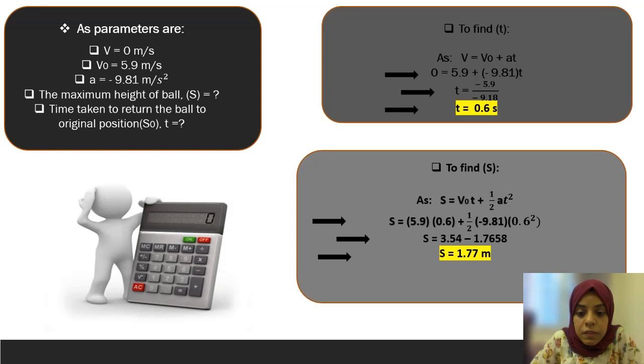By substituting the values and solving the equation, we find the time is equal to 0.6 seconds. To find the displacement, we use the equation: displacement equals initial velocity multiplied by time plus half of acceleration multiplied by time squared. Substituting the values, we get the displacement equal to 1.77 meter.